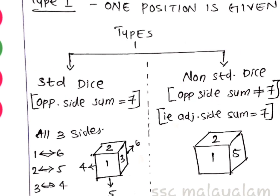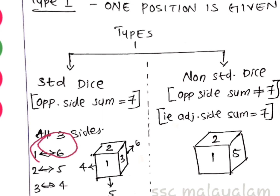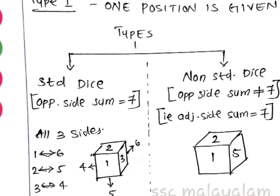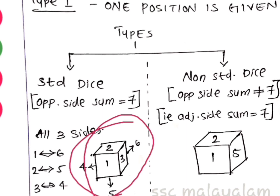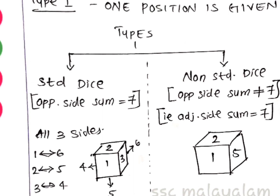The standard die has a rule: the opposite sides always sum to 7. If we have side 1, the opposite side is 6 — sum is 7. Side 2 is opposite to 5, and 3 is opposite to 4 — all summing to 7. This is the standard die rule.